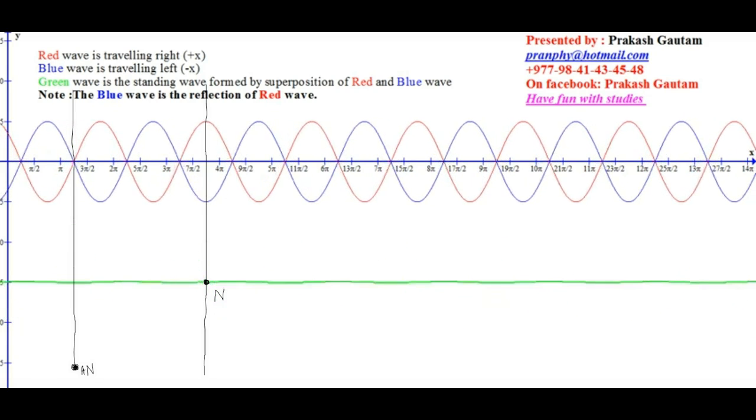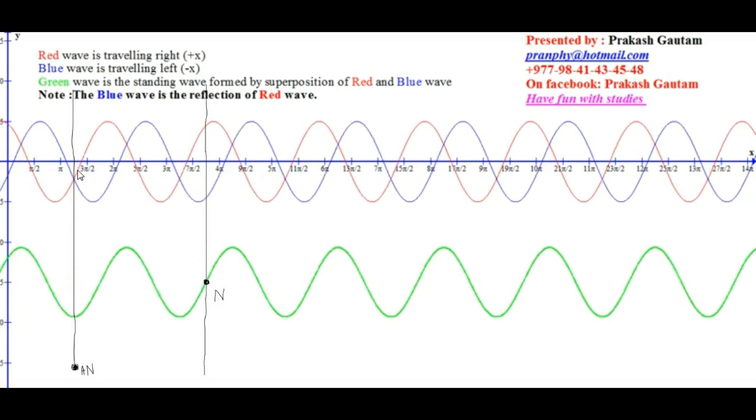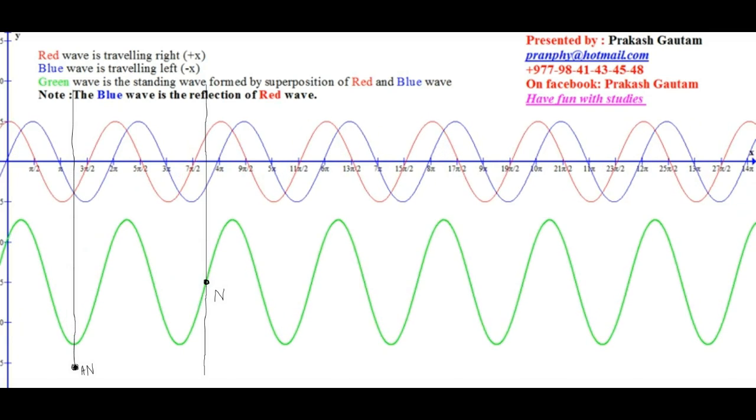Let's start here. At this point, the blue is negative displacement, the red wave is also negative, so that's constructive at the antinode. Here, blue is pointing down, negative displacement, but red is up. So the node has destructive interference.